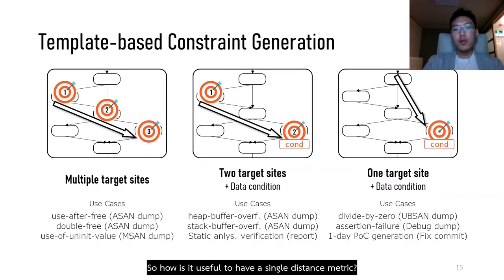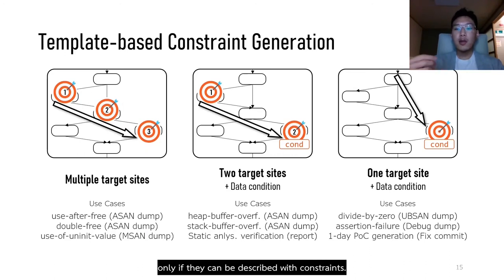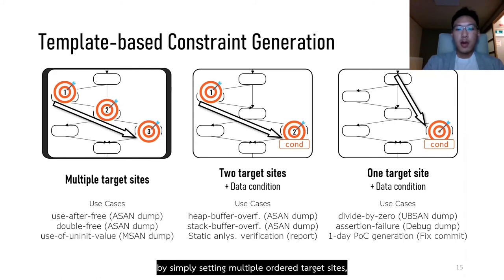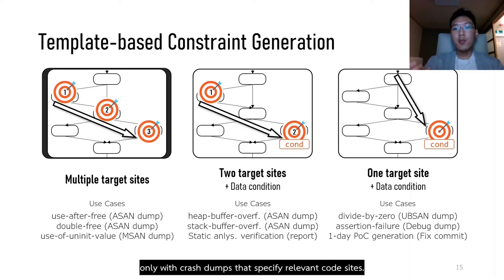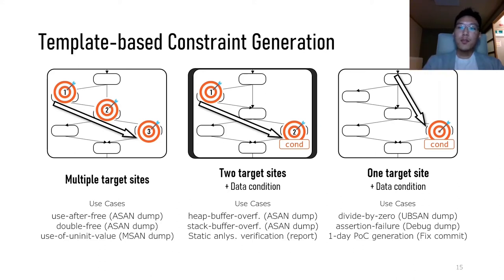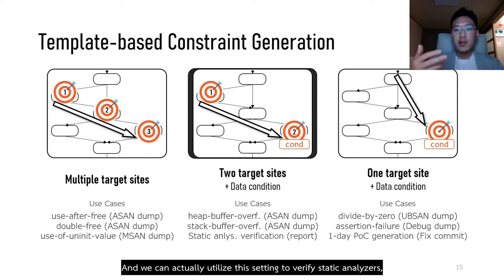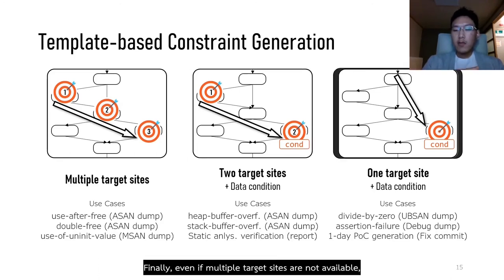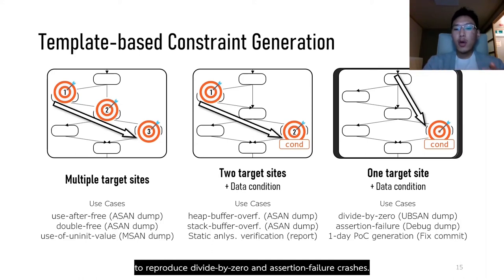How is it useful to have a single distance metric? It enables a variety of targeted fuzzing purposes as long as they can be described with constraints. For example, by setting multiple ordered target sites, we can reproduce use-after-free, double-free, and uninitialized value crashes using only crash reports that specify relevant code sites. Furthermore, two target sites plus a data condition can be used to reproduce heap buffer overflow crashes. You can also use this setting to verify static analyzers whose reports specify target sites and crashing data conditions. Finally, even with just one target site and a data condition, we can reproduce divide-by-zero and assertion failure crashes, and even generate proof-of-concept inputs.